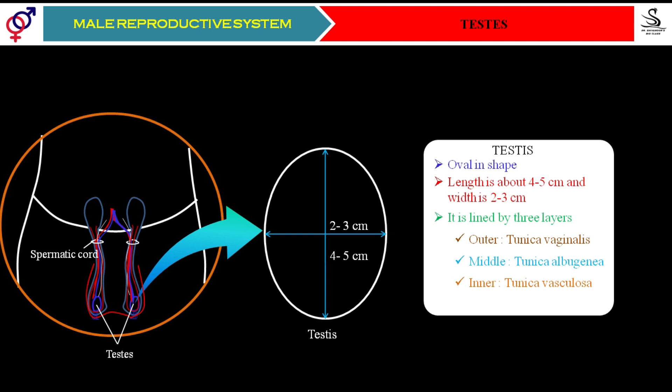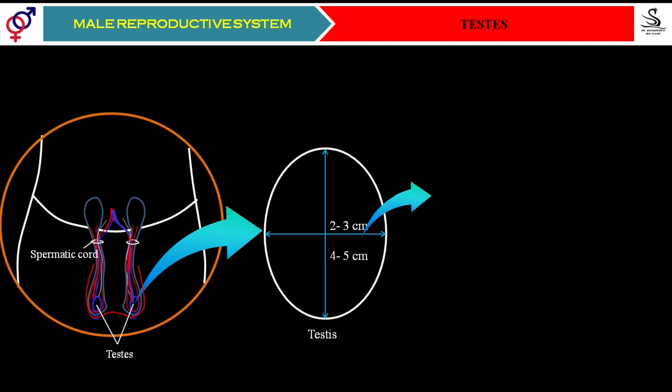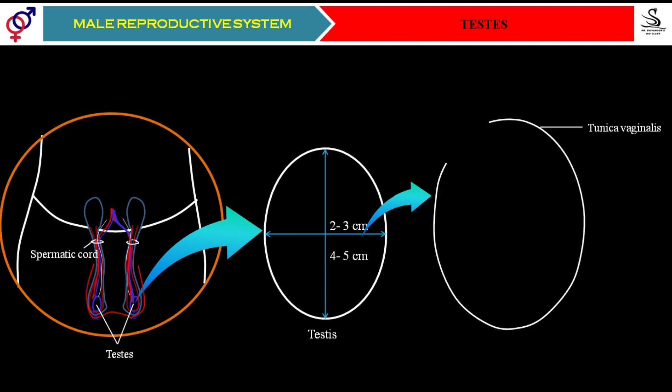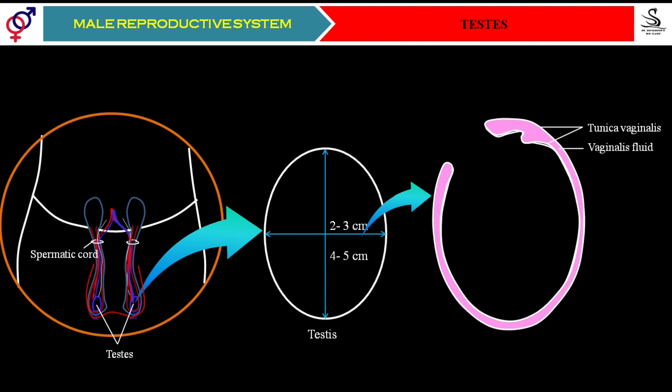Now we will understand by taking a sectional view of the testes. In the sectional view we find the outer layer tunica vaginalis, and between its two layers we find the presence of a space. In that space there is a fluid called vaginalis fluid. Tunica vaginalis along with its fluid protects the testes from mechanical shocks — when the scrotum gets any mechanical pressure, nothing happens to the testes because of tunica vaginalis and its fluid.